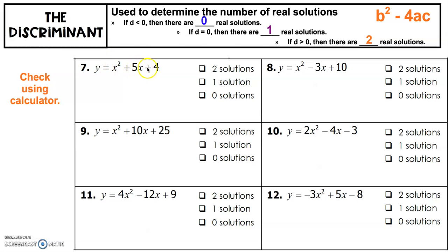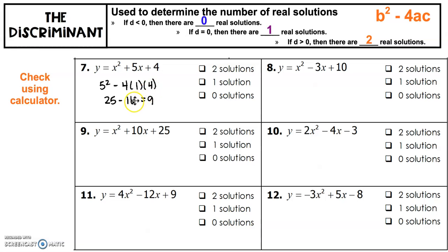For problem 7, we identify a = 1, b = 5, c = 4. Computing the discriminant: b² − 4ac = 5² − 4(1)(4) = 25 − 16 = 9. Since 9 is greater than 0, we have two solutions.